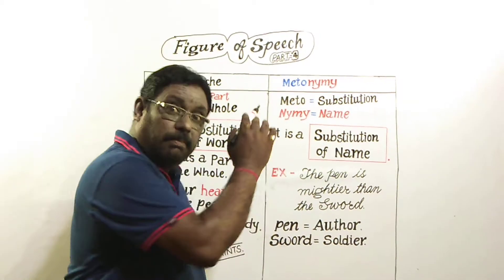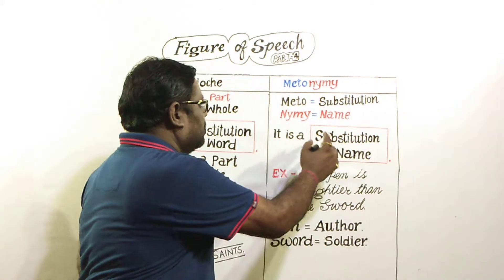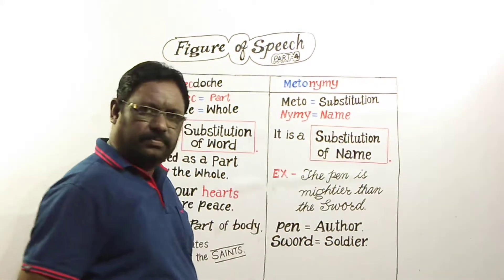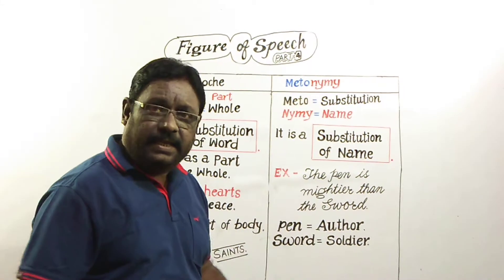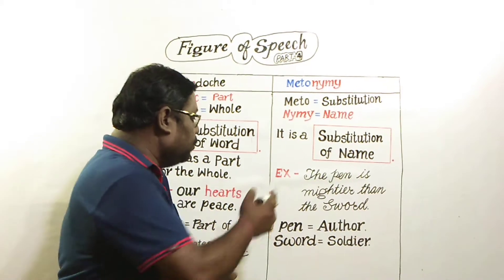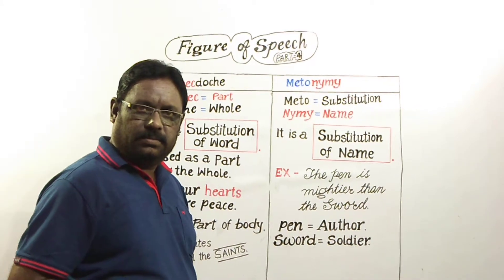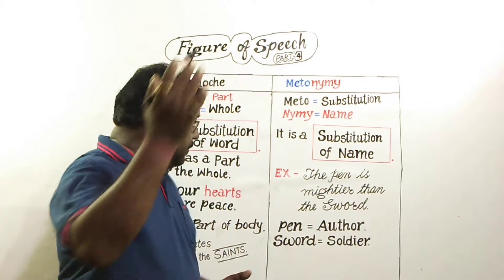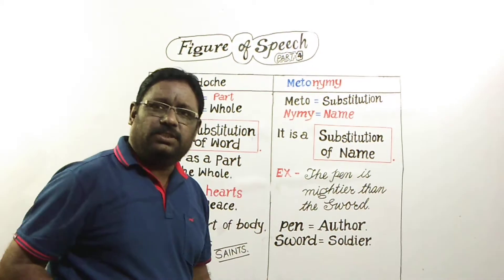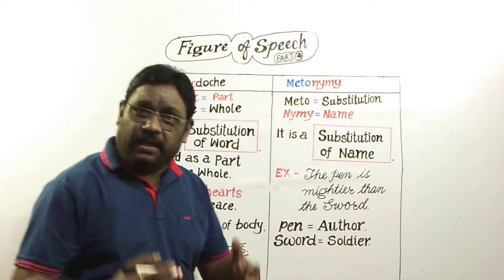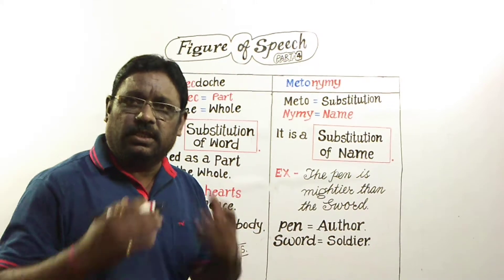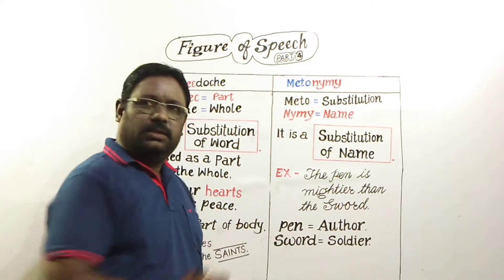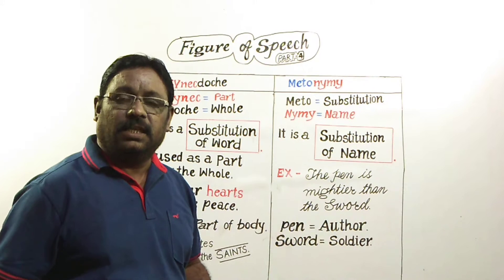Metonymy is a substitution of name. For example, the pen is mightier than the sword. Here the pen means author, the pen symbolizes author and the sword symbolizes the soldier.